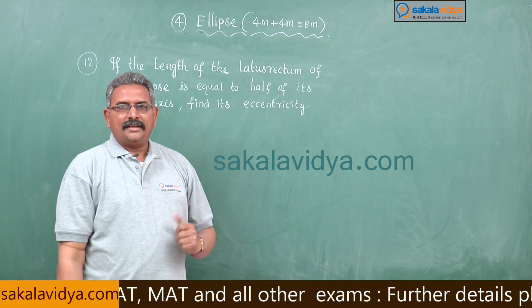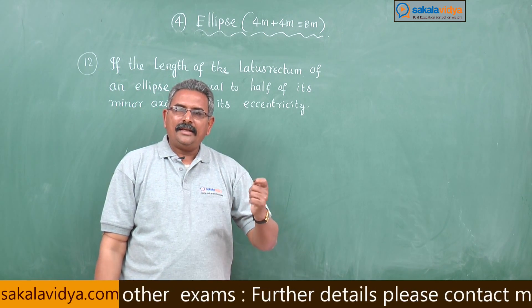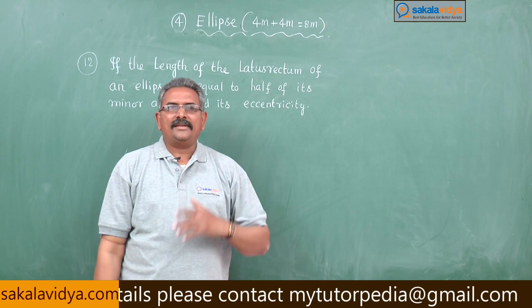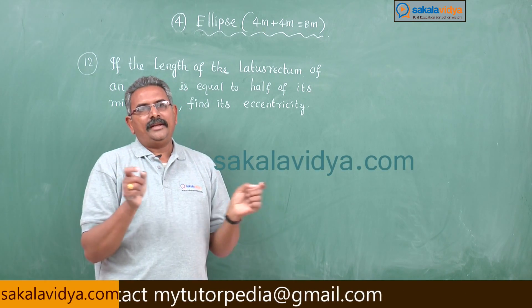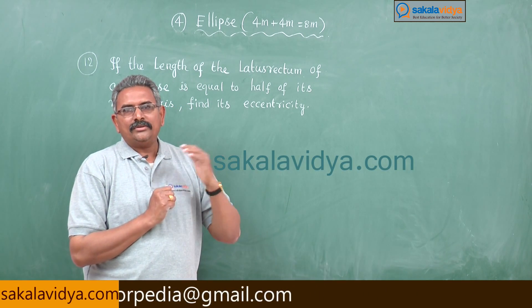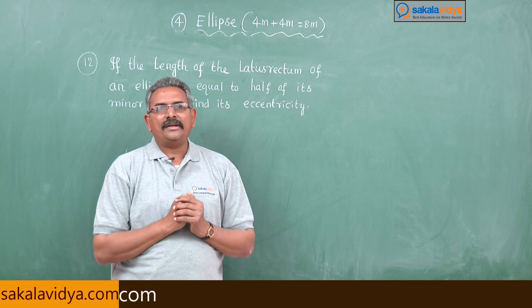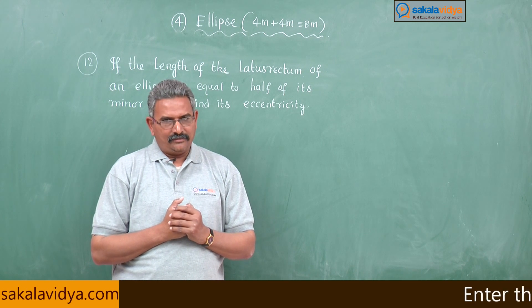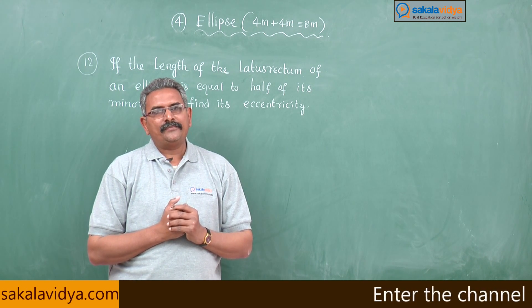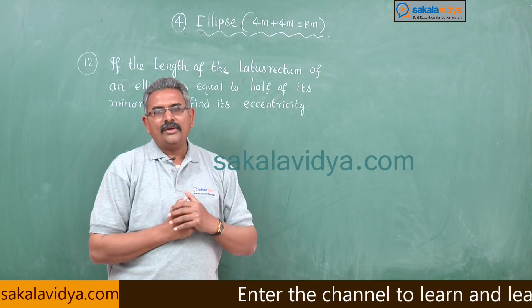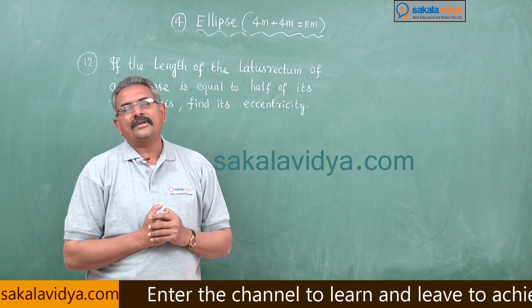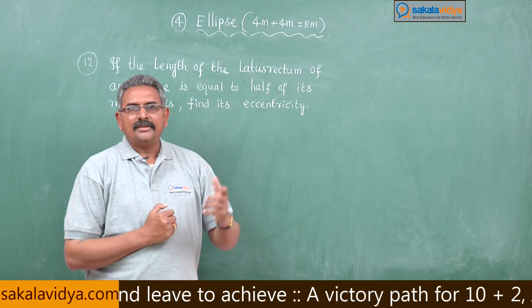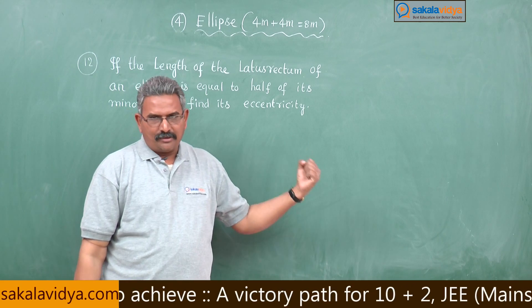That means: 2b²/a = (1/2)·2b, and the 2's cancel, giving us a relation between a and b. We know that b² = a²(1 - e²), and with that condition we can find the value of e. This is also one of the important problems for engineering entrance examinations at both state and national level.